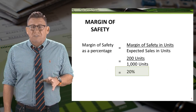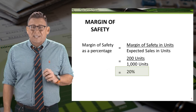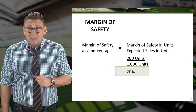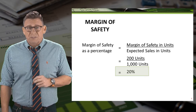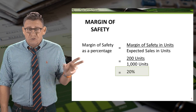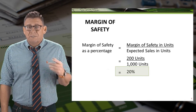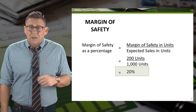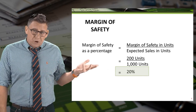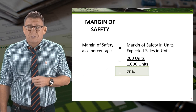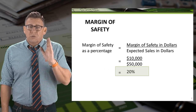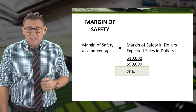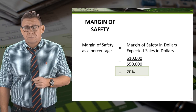Sometimes margin of safety is presented as a percentage. The formula to calculate the margin of safety percentage is margin of safety in units divided by expected sales in units. In this example, the margin of safety percentage is 20%. We can do the same thing in sales dollars, and we will get the exact same percentage.